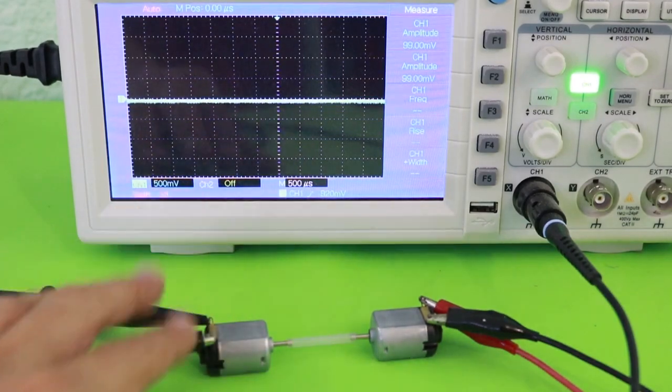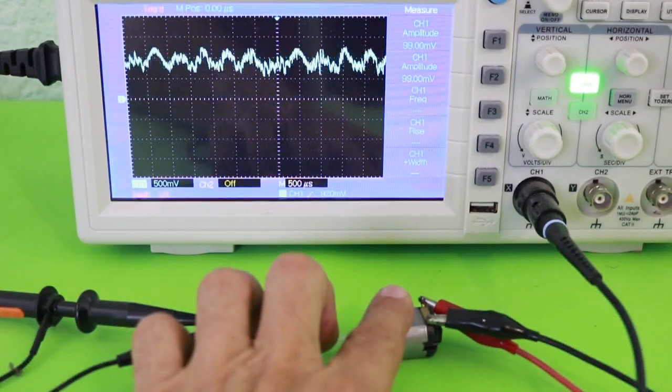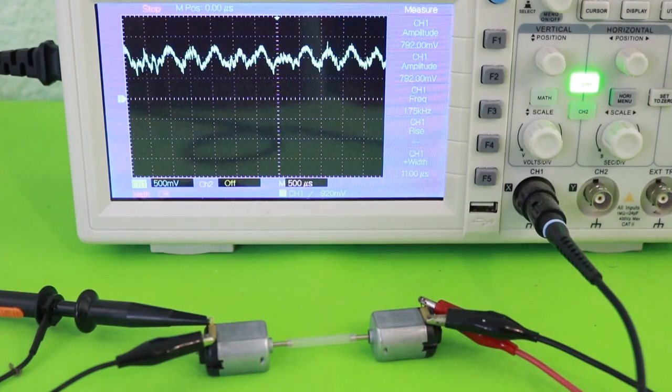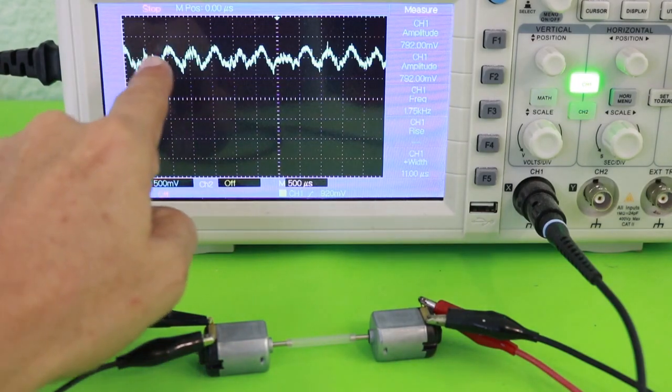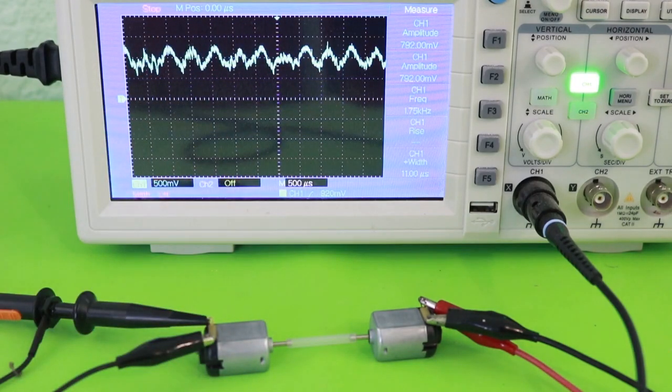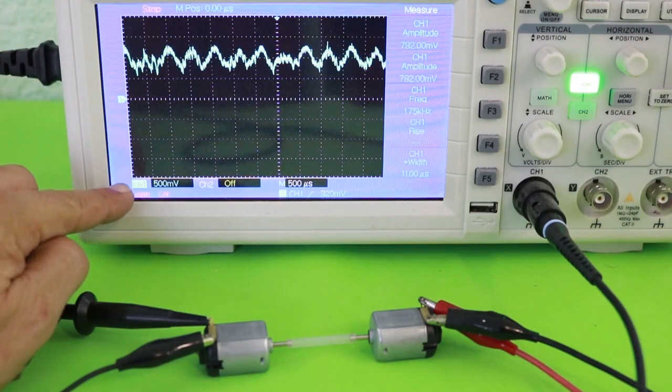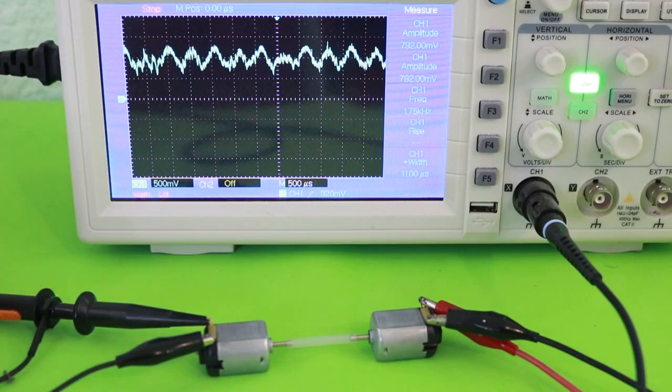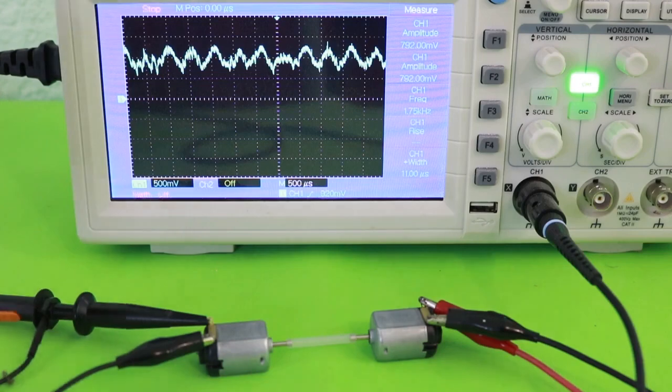Let's see the output of the generator on the oscilloscope. As it can be expected, it is not pure DC, like that from a battery, which would be a single flat line. We have these variations of the output voltage. The average is we have two divisions. 500 millivolts per division is around one volt, as we already have seen in the multimeter. But there are these variations on the output. Definitely, it is not AC because it never crosses the zero and becomes negative.